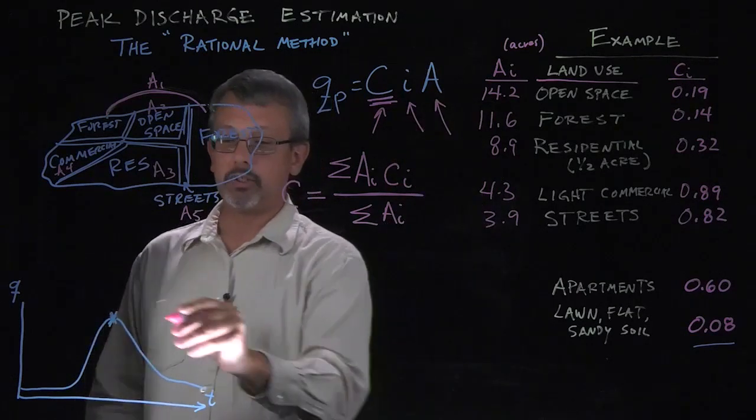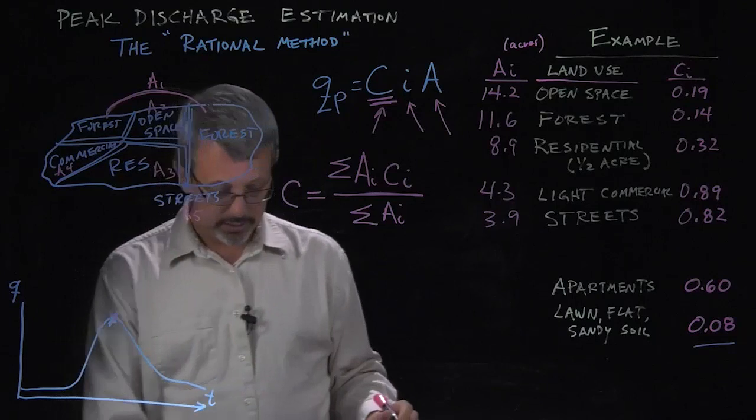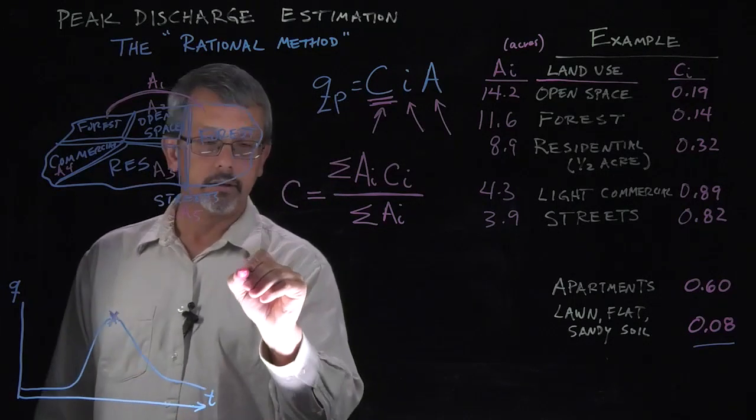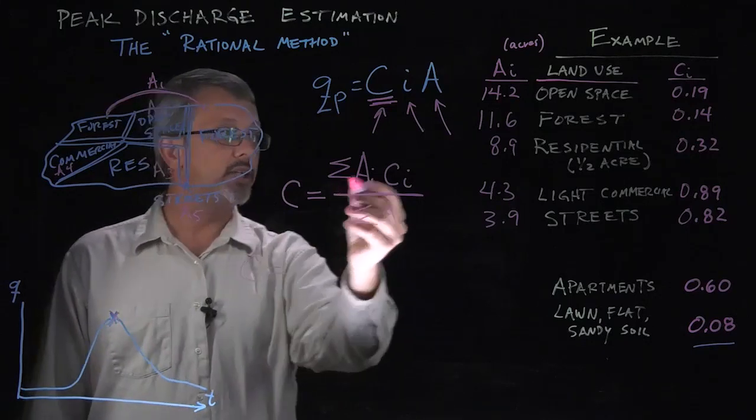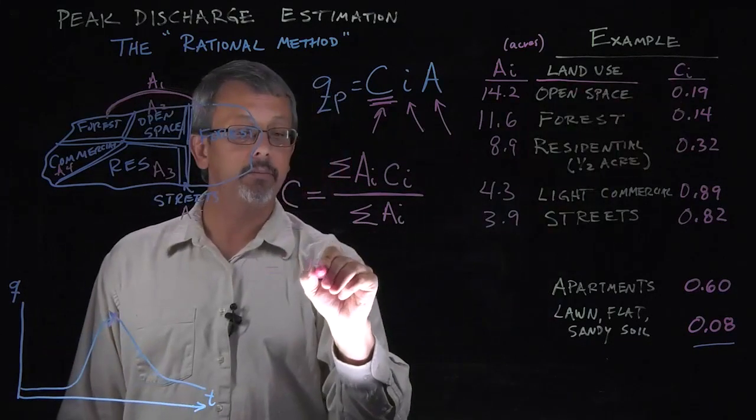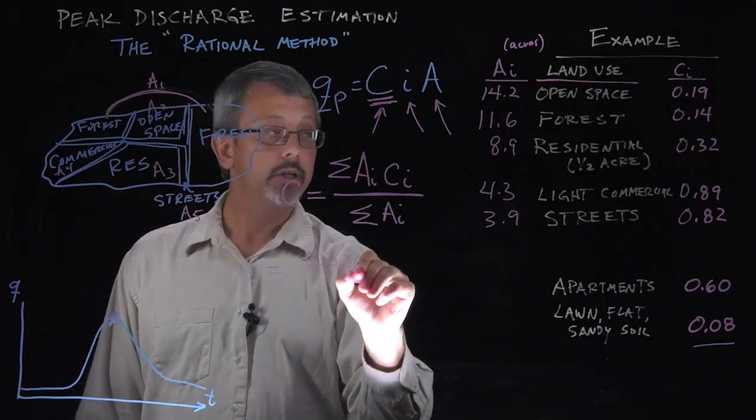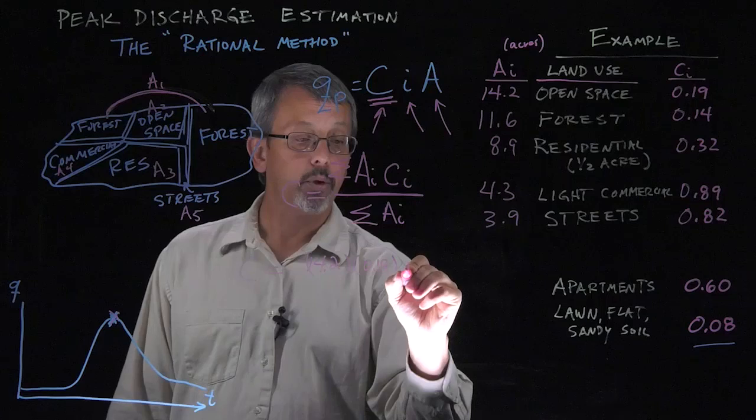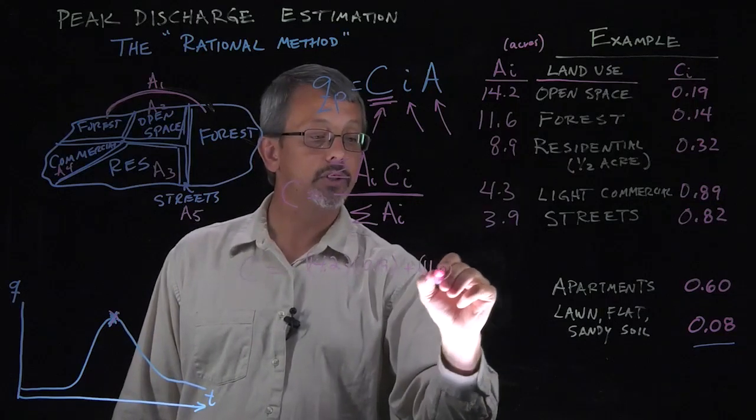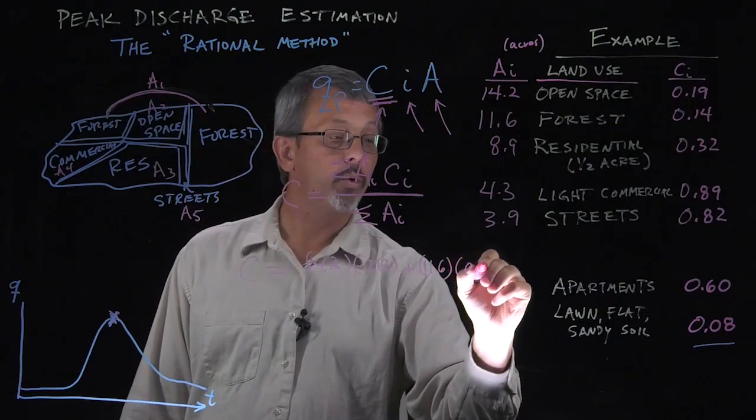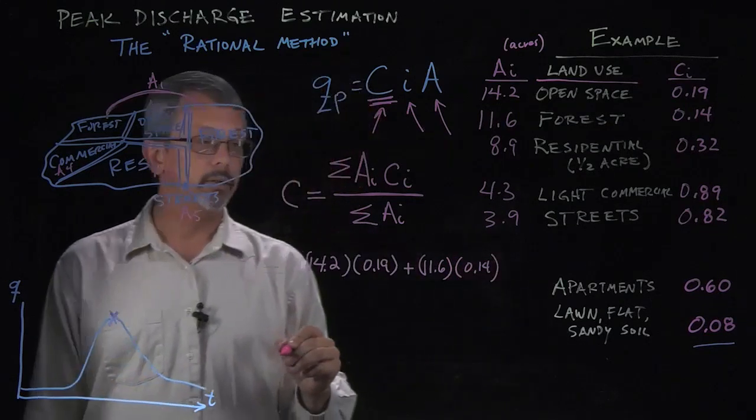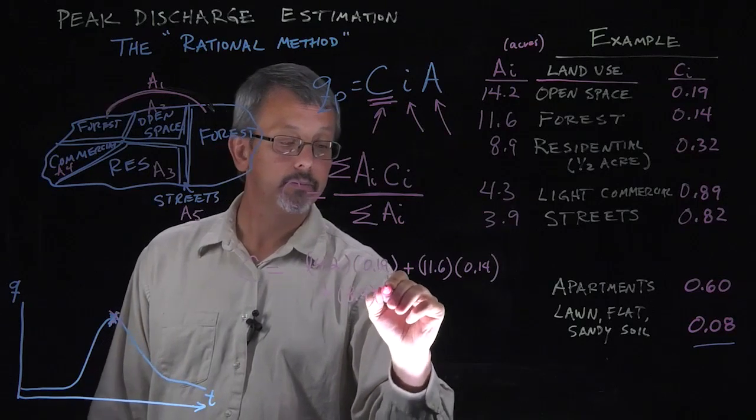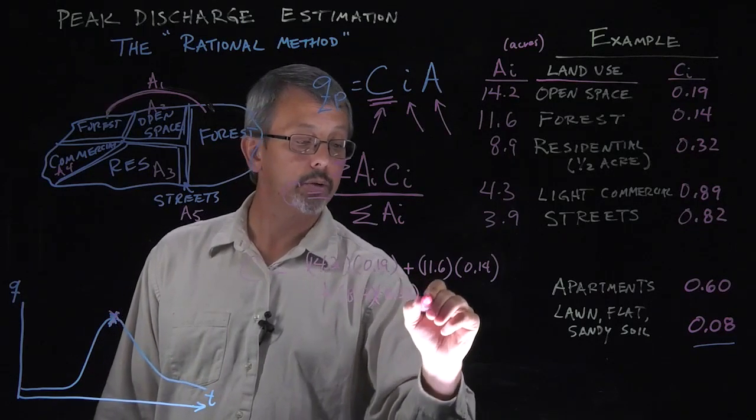For example here, I would take each of these. I would take the 14.2 acres times the 0.19 acres. I would add the 11.6 acres multiplied by the 0.14 value coefficient plus the 8.9 acres times 0.32, etc.